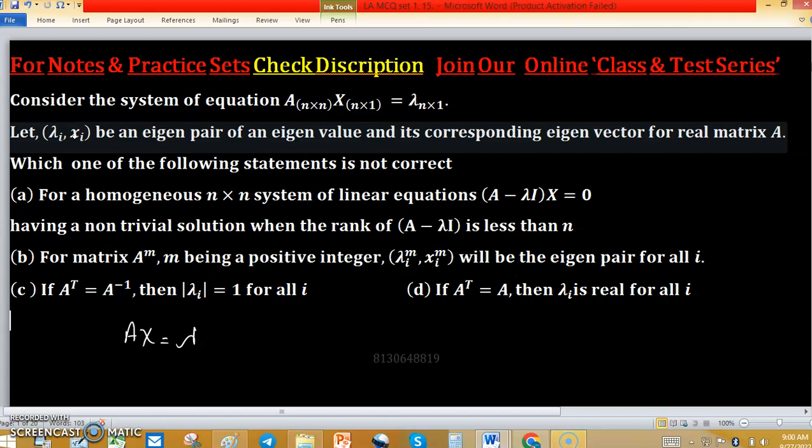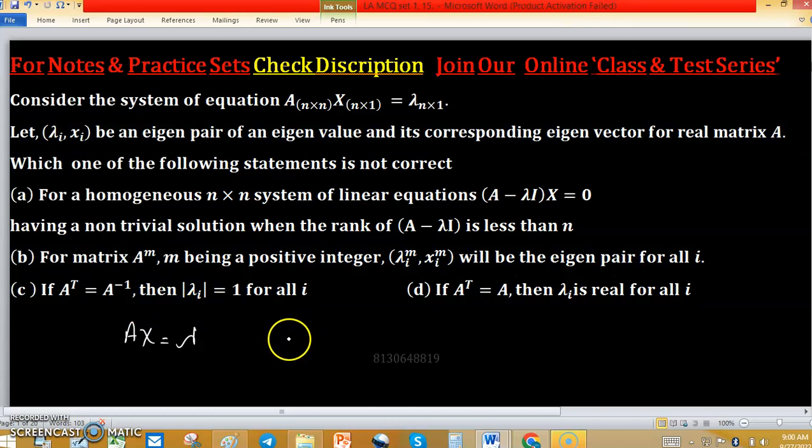We could understand the equation. Options A, B, C and D are given. What is given in these options? For a homogeneous n cross n system of linear equations A minus lambda I times x equals to 0. One system A minus lambda I x equals to 0.